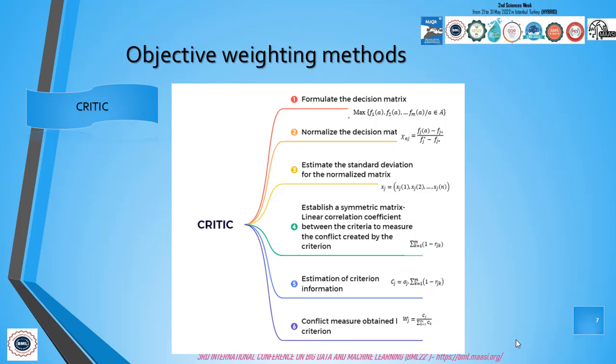CRITIC consists of these steps. First, formulate the decision matrix. Then normalize the decision matrix or input matrix. F star G is the ideal value or best solution, and F G star is the worst solution or non-ideal value. Third, estimate the standard deviation for the normalized matrix. Fourth, establish symmetric matrix linear correlation coefficients between criteria to measure conflicts. Fifth, estimation of criterion information. Sixth, conflict measure obtained by the Gth criterion.